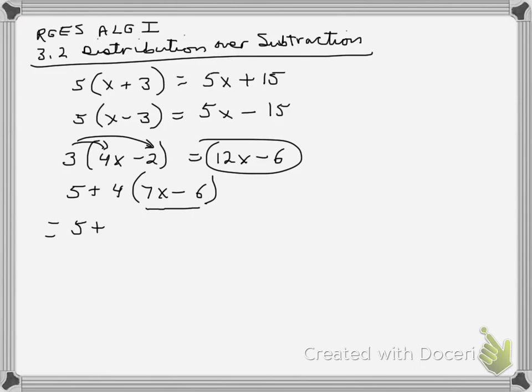We're going to say that equals 5 plus, do the distribution first. Notice we would do, by order of operations, what's in the parentheses first, but we cannot simplify what's in the parentheses there. So our only choice is distribution. 4 times 7 is 28x minus 4 times 6 is 24.